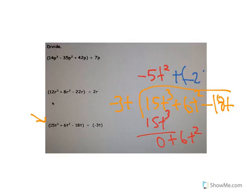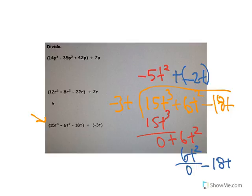Bring down the 6t squared. Now I have to figure out how to change negative 3t into 6t squared. I have to multiply by a negative number, so it's going to be negative 2t — because negative 2t times negative 3t equals 6t squared, giving zero. Bring down minus 18t. How do I change negative 3t into negative 18t? I multiply by 6 — 6 times negative 3t is negative 18t.